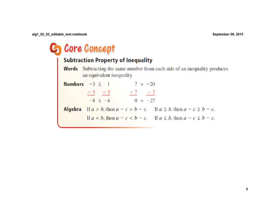So if I'm adding a negative 5 to each side in this first example here, negative 3 plus negative 5 would be a negative 8, it's still less than or equal to a negative one-fourth, and so on.